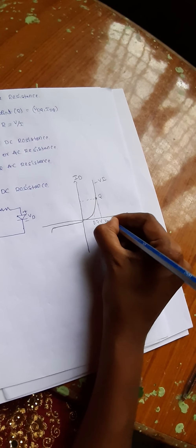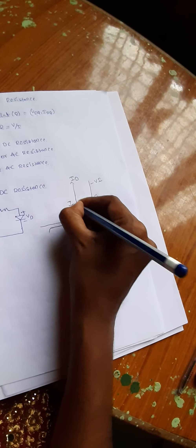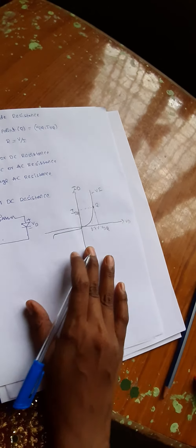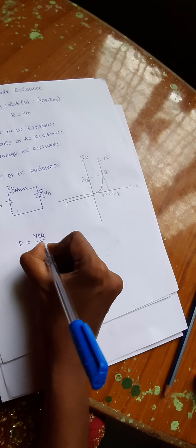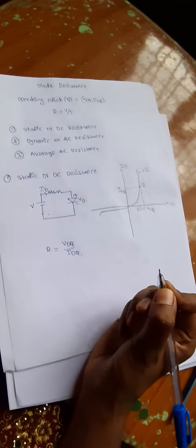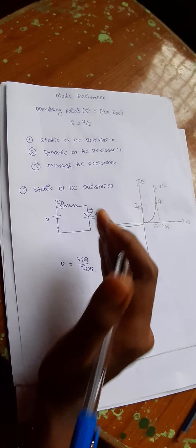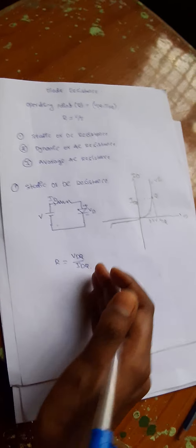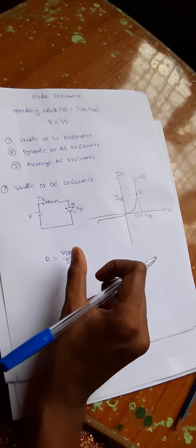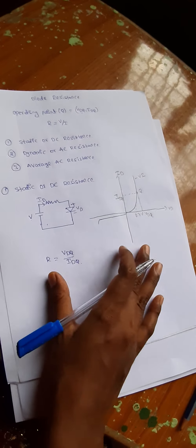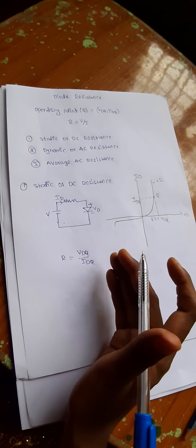This is Vdq and this is Idq. Since we are applying DC values, R is simply Vdq divided by Idq, because the values do not change with time. The resistance equals the operating point (Vdq, Idq), so we can find the resistance using that operating point as Vdq over Idq.